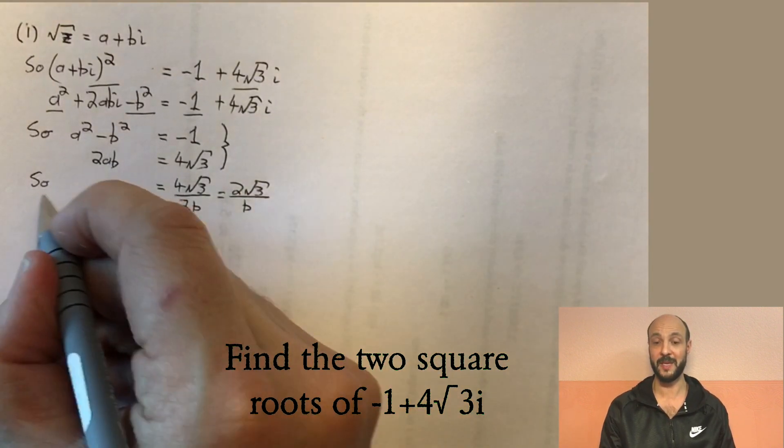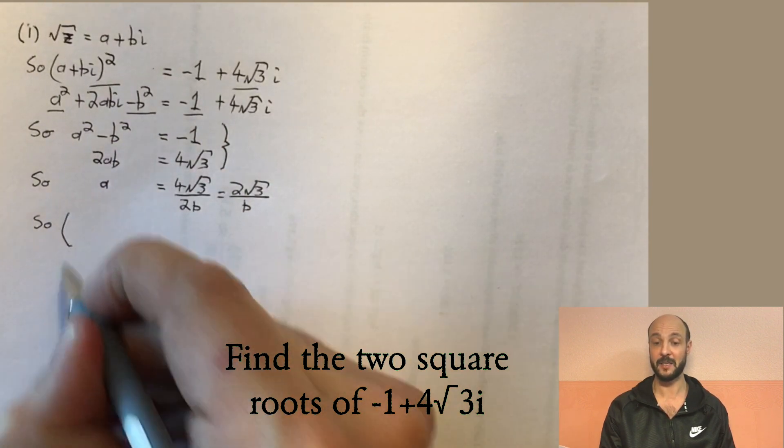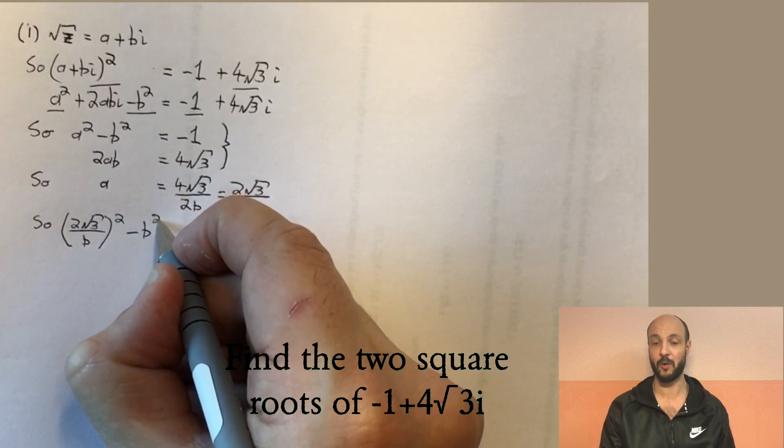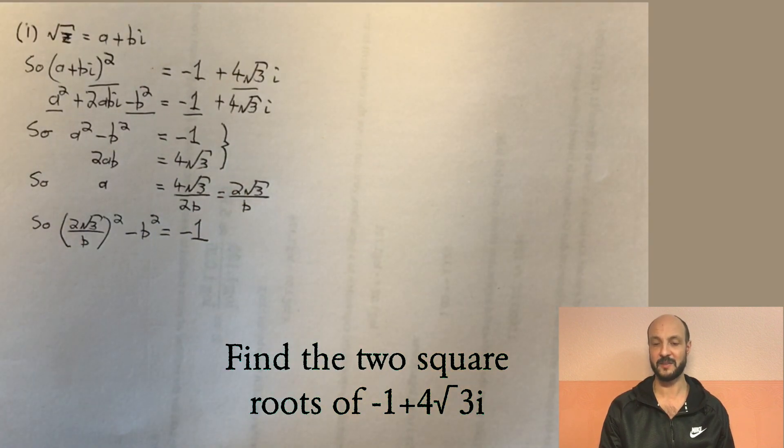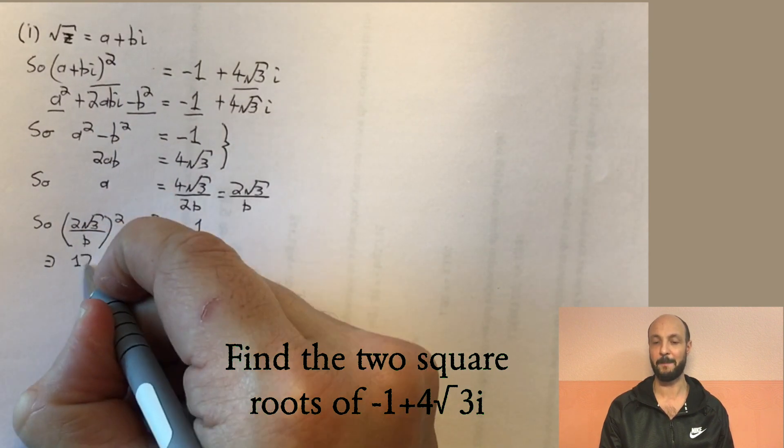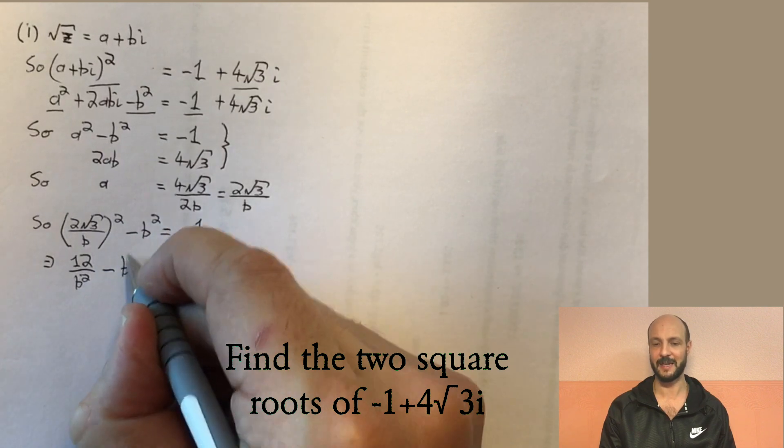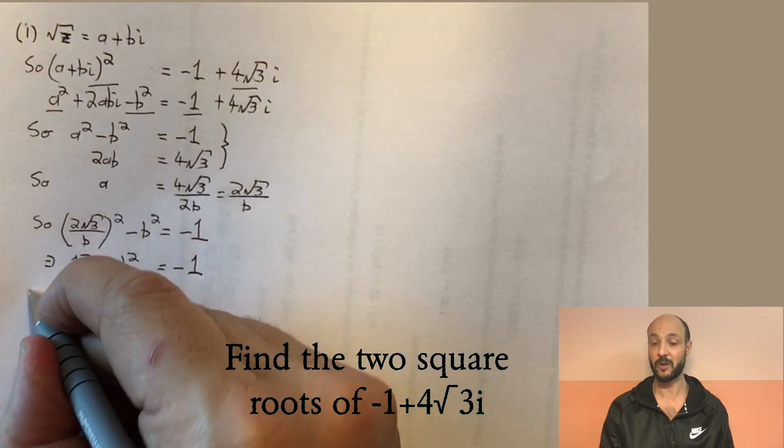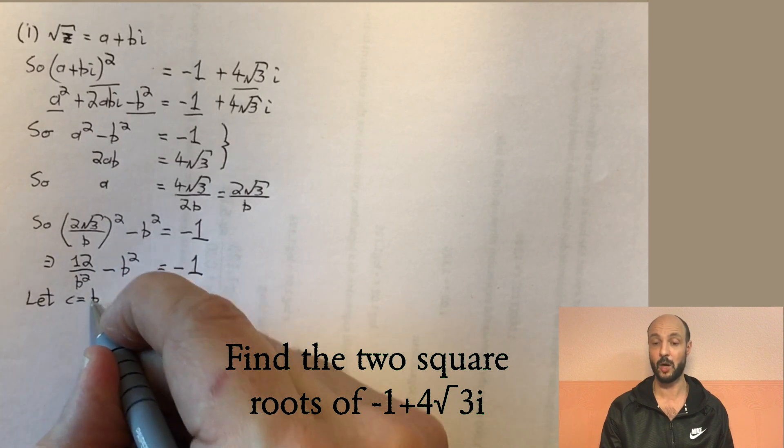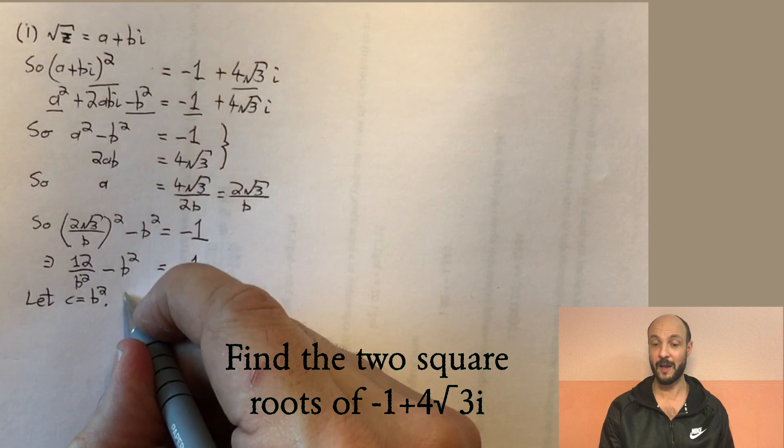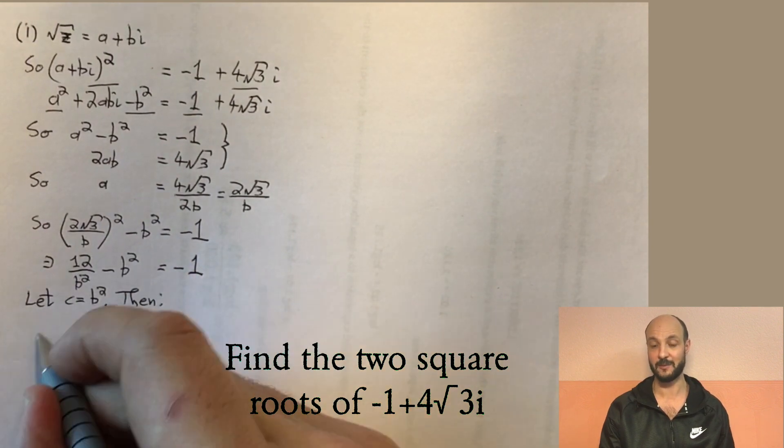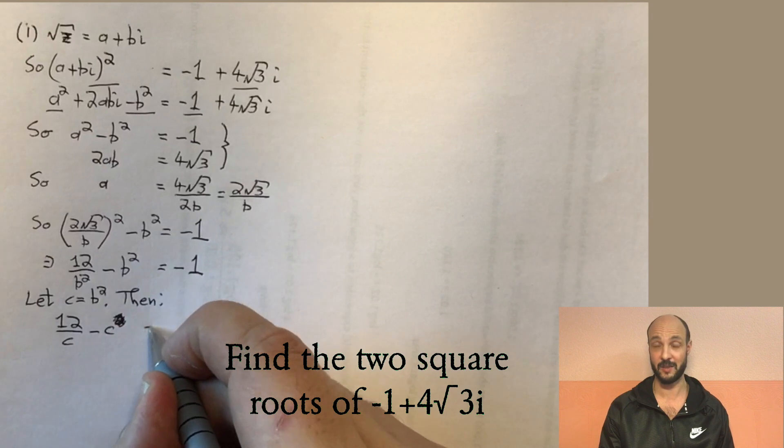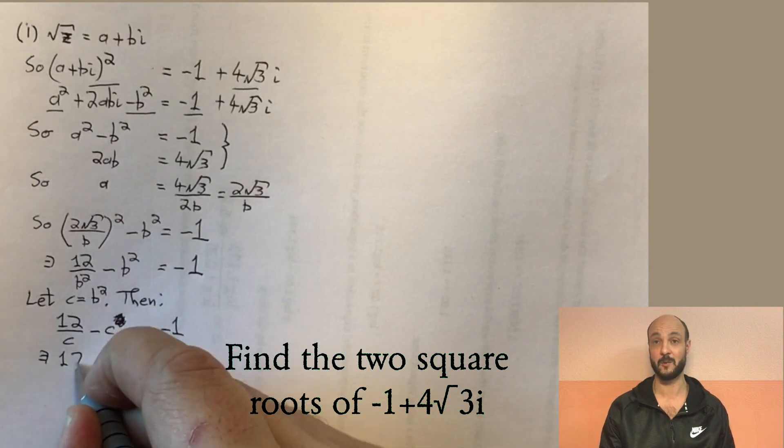We then take that value of a and substitute it into the first equation. So we say two root three over b all squared minus b squared equals minus one. Now if we multiply by b squared here, we're going to have a quartic equation at the power of four. So to make our life a little easier as we only have b squareds figuring here, what we can do is we can replace our b squared by c. So if we square what's in the brackets there, we'll see two root three squared is twelve because two squared is four and root three squared is three, four times three is twelve. So we've got twelve over b squared minus b squared equals minus one and we can substitute b squared for c to give us twelve over c minus c equals minus one. Then when we multiply by c, we've got twelve minus c squared equals minus c, which rearranges to give a straightforward quadratic equation c squared minus c minus twelve equals zero.